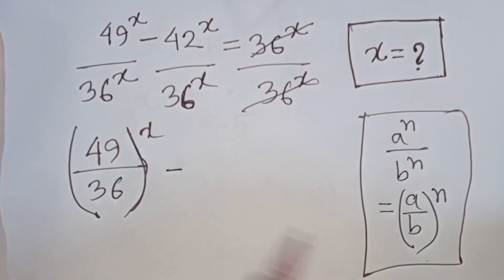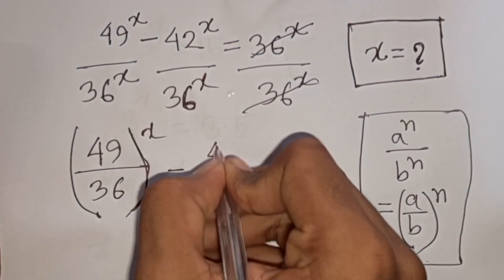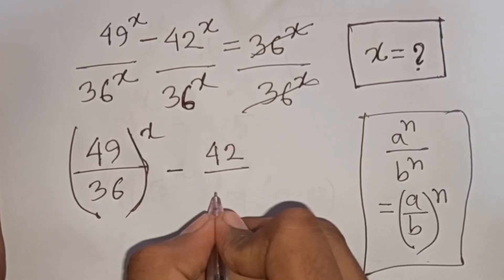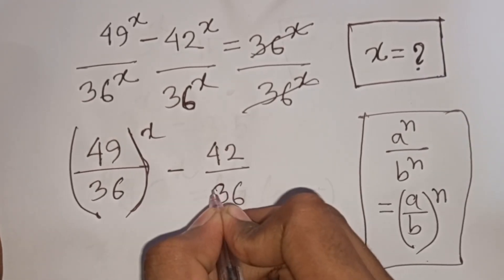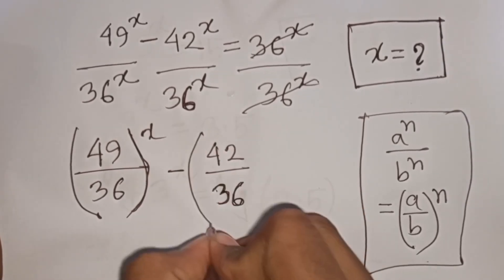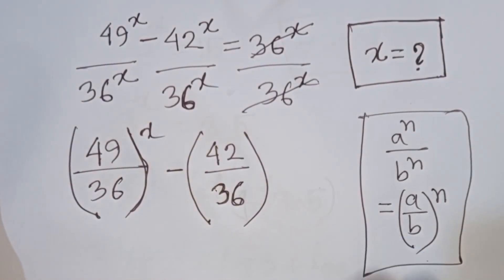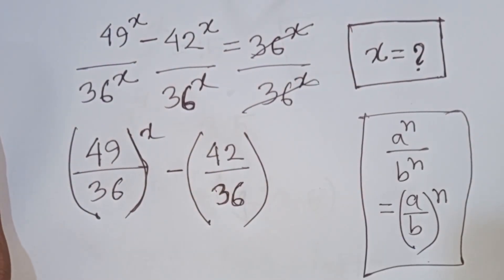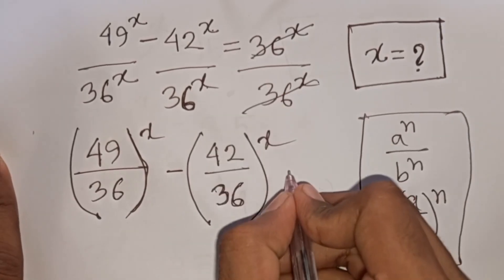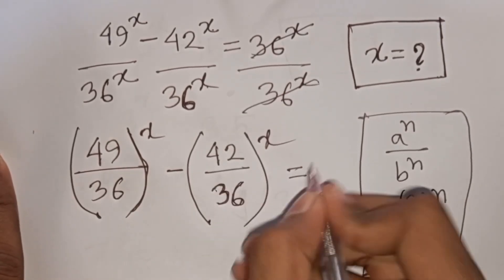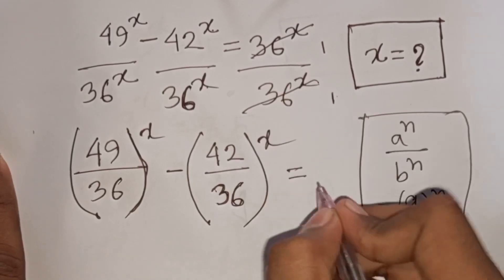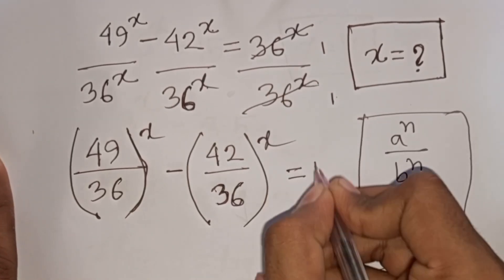And again, same power but different base, so according to this formula we can write 42 over 36 to the power x. The right-hand side becomes 36^x / 36^x, which equals 1.